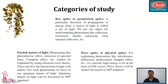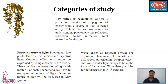Wave optics is therefore called physical optics. The third category is particle nature. Phenomena like the photoelectric effect, emission of spectral lines, and the Compton effect cannot be explained by classical wave theory. These involve the interaction of light with matter. For such phenomena, we have to use the quantum nature of light.